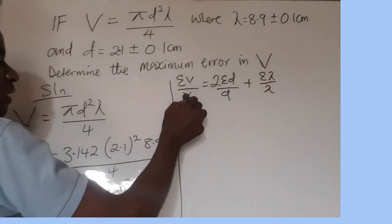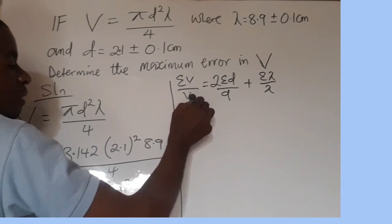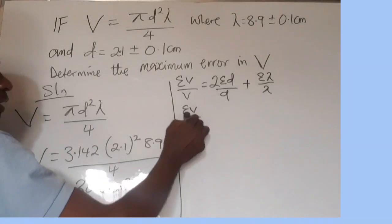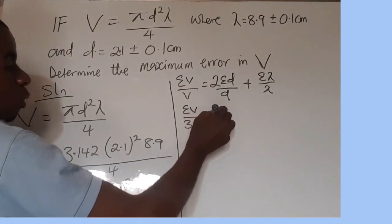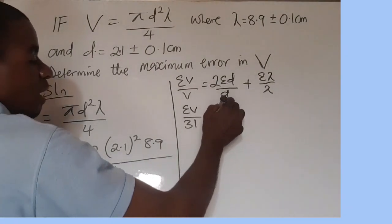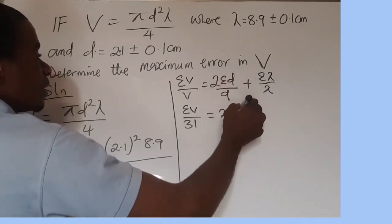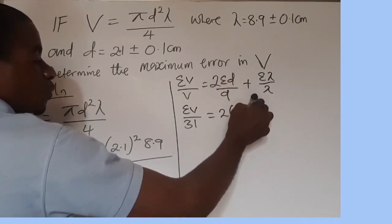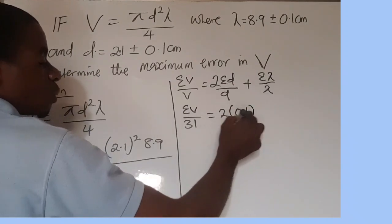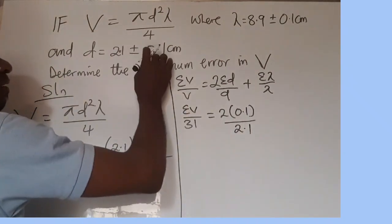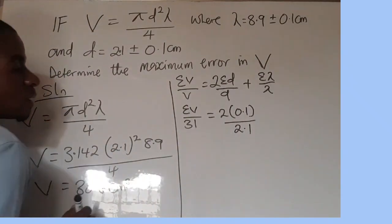So we substitute straight on: the error in V all over, we can approximate this to be 31, equal to 2 into the error in d. The error in d is 0.1, close the bracket, all over d. d is 2.1. This is the error in d.